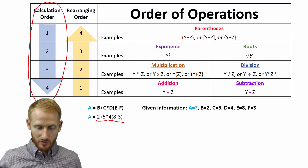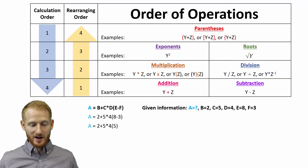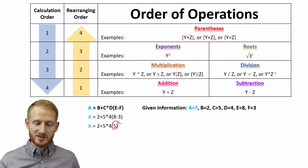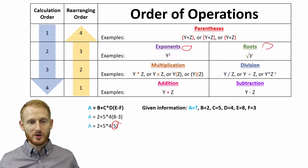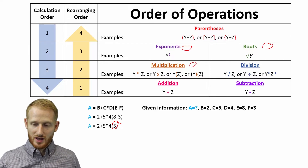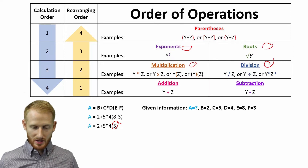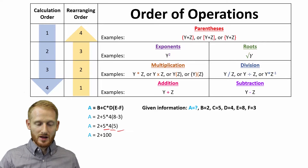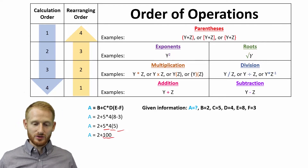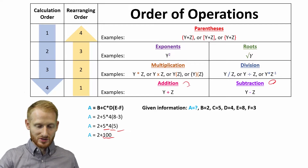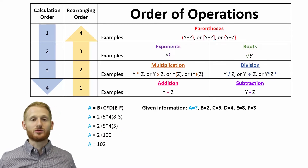The first thing we do is solve what's in the parentheses: 8 minus 3 equals 5. Now that we've taken care of the parentheses, we move to exponents and square roots — we don't have any, so we skip that. Next is multiplication and division. We have no division, but we do have multiplication: 5 times 4 times 5 equals 100. Now all we have left is addition: 2 plus 100. So a equals 102.